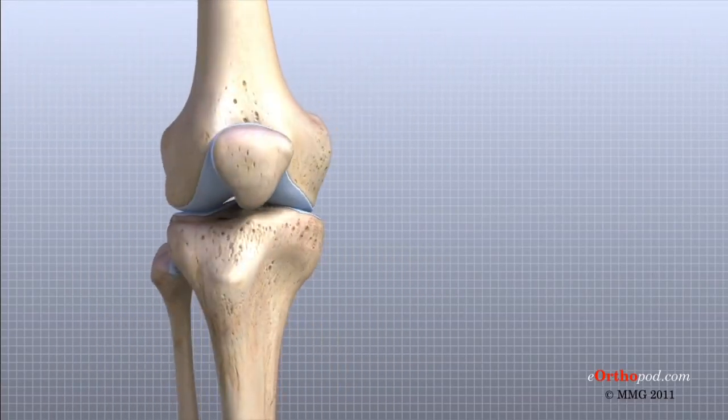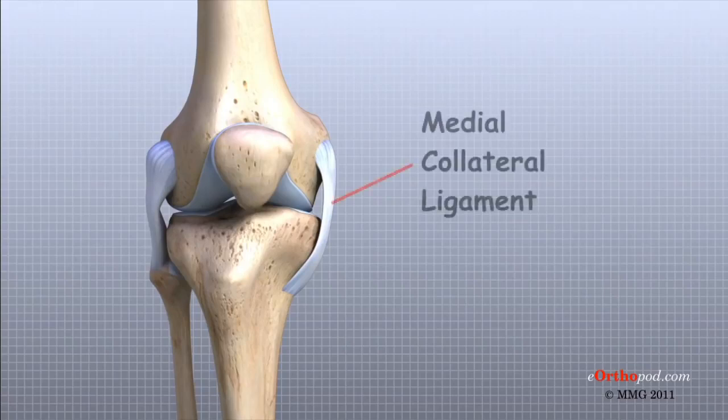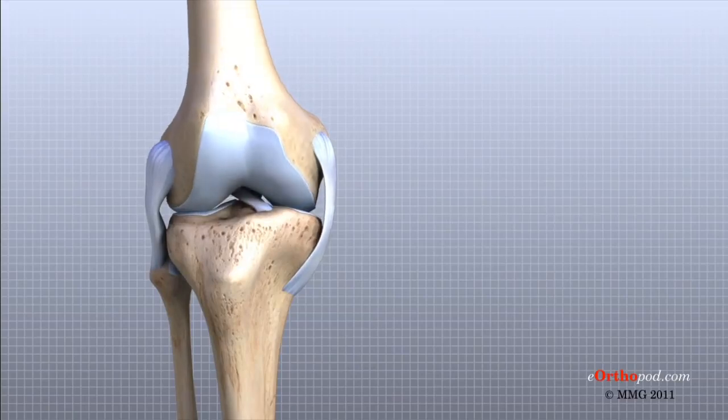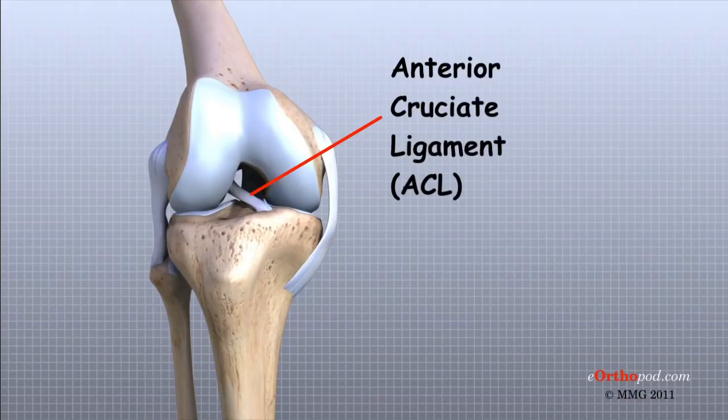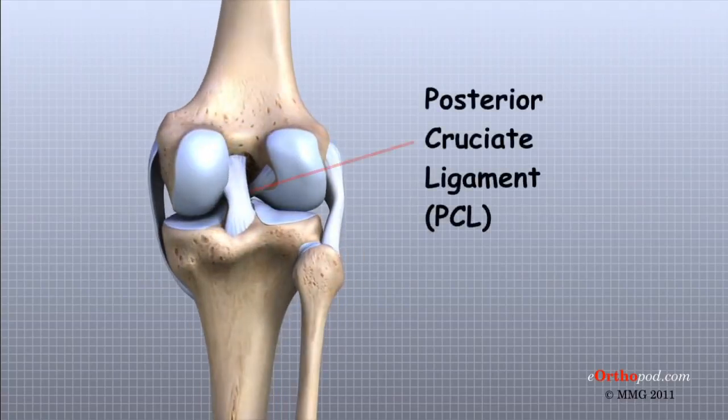Ligaments are tough bands of tissue that connect the ends of bones together. Two important ligaments are found on either side of the knee joint. They are the medial collateral ligament or MCL and the lateral collateral ligament or LCL. Inside the knee joint, two other important ligaments stretch between the femur and the tibia. The anterior cruciate ligament or ACL in front and the posterior cruciate ligament or PCL in the back.